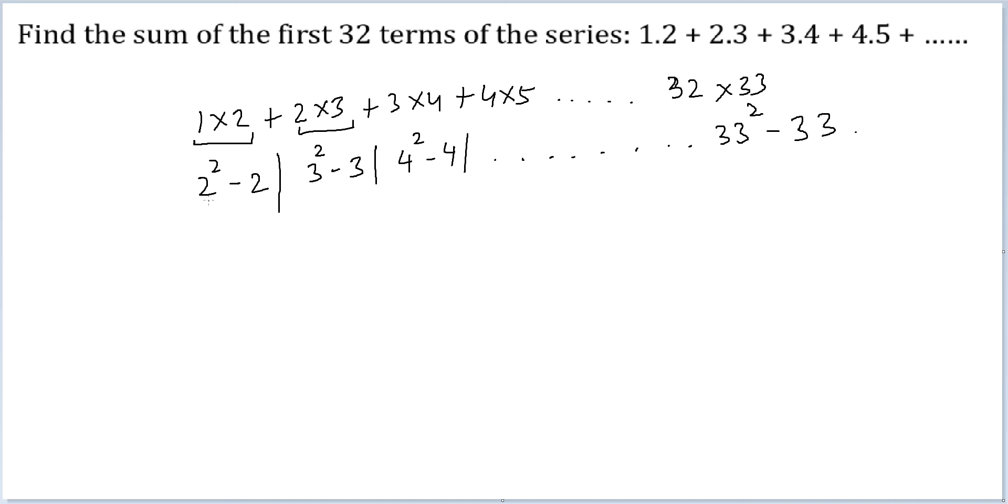So effectively, what you have is summation of all perfect squares up until 33, which will be given by n into n plus 1 into 2n plus 1, whole thing divided by 6.